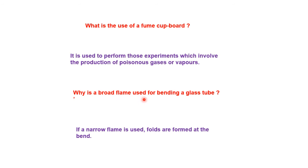Why is a broad flame used for bending a glass tube? If a narrow flame is used, folds are formed at the bend. Glass is a super-cooled liquid — when you heat glass it becomes liquid and you can bend it in any form. We use a broad flame so that heat is supplied uniformly where the bend is, so that folds are not formed. If folds are formed, that tube is not suitable — those folds will act as obstacles when using it as a delivery tube for water or gas. That's why for this purpose we use a broad flame.